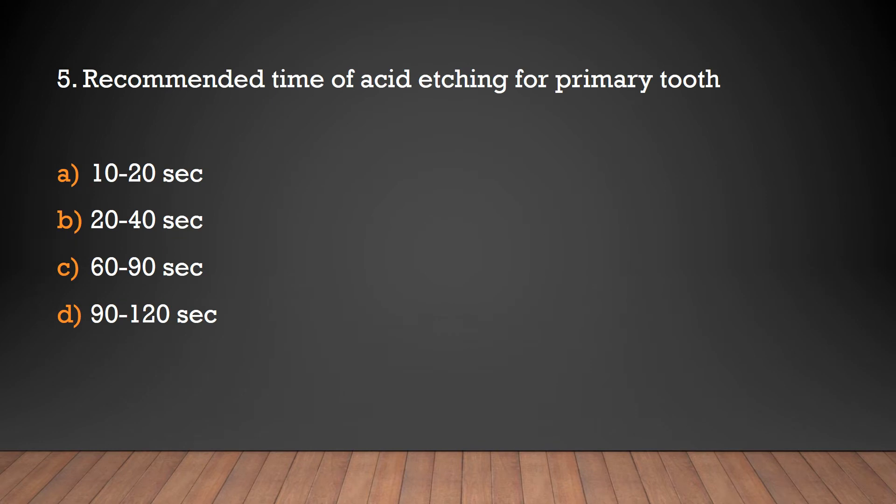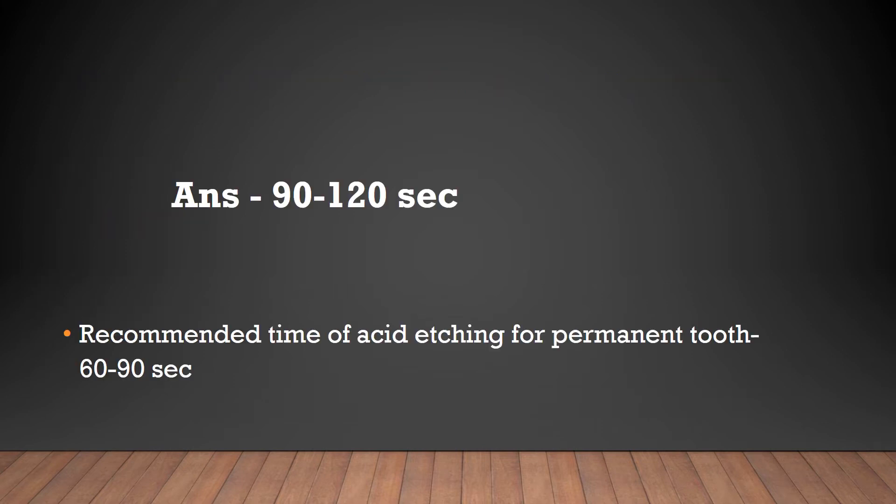Recommended time of acid etching for primary tooth: 10 to 20 seconds, 20 to 40 seconds, 60 to 90 seconds, 90 to 120 seconds. Time of acid etching for permanent tooth: 60 to 90 seconds.